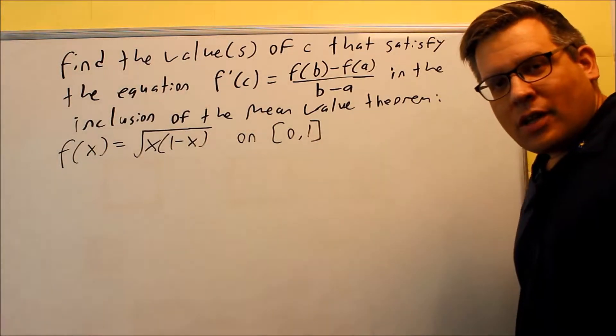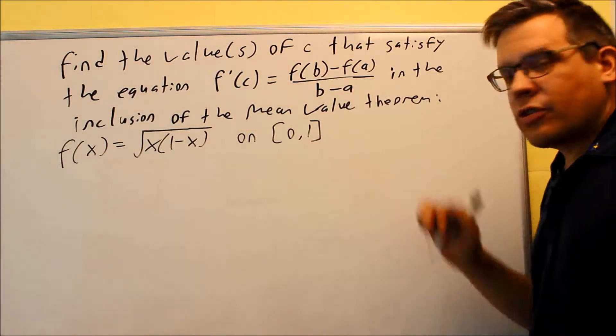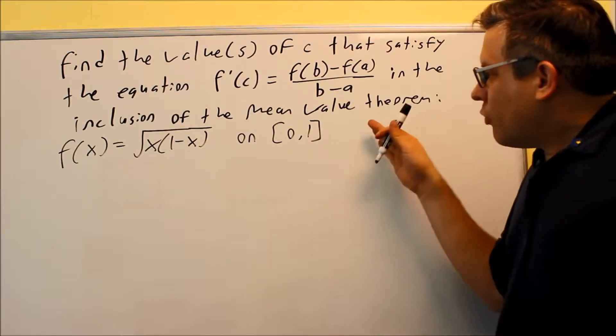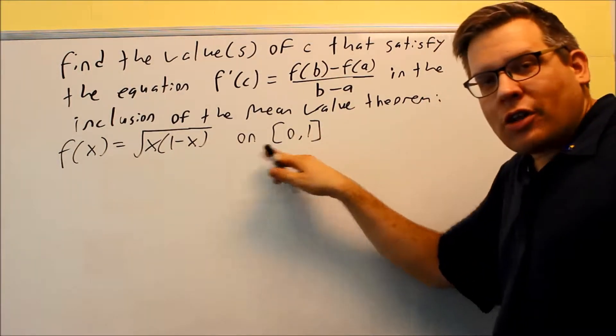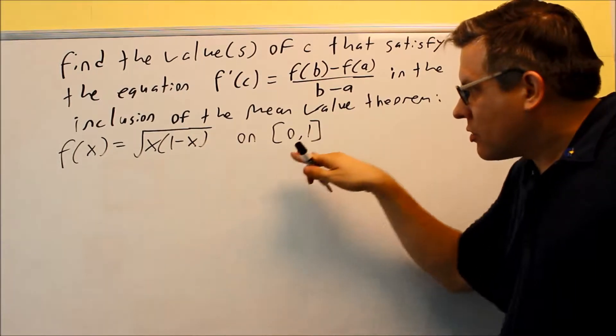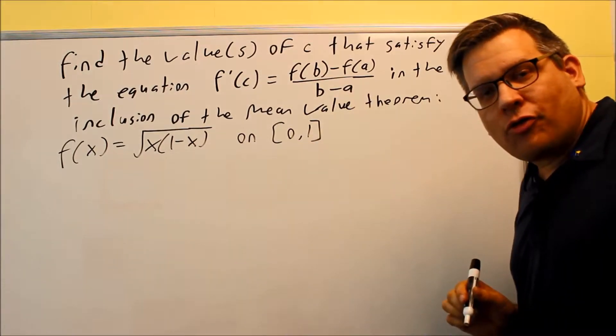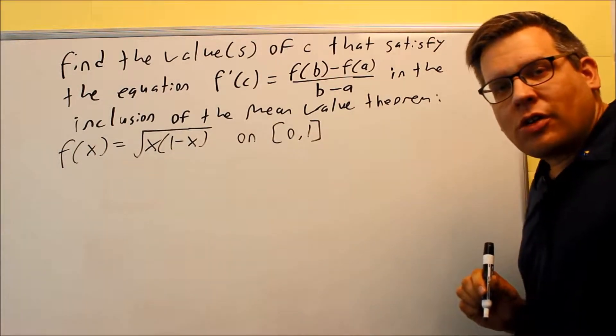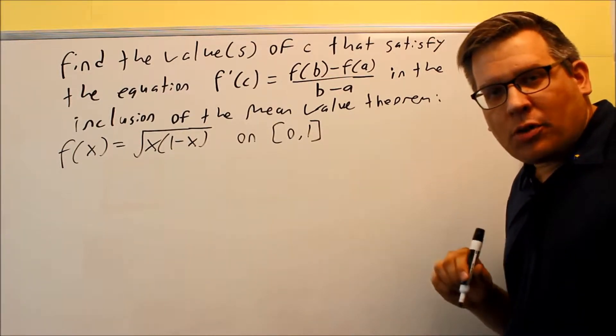Okay, let's do one with the square root. Now first thing, we'll make sure that the mean value theorem can be applied here. We have to first check to make sure that our original function is continuous on that closed interval from 0 to 1. With square roots, you just have to make sure that you're not taking the square root of a negative number.